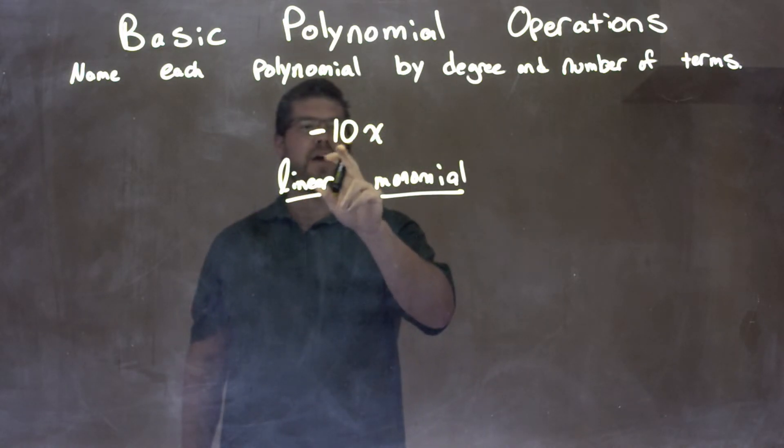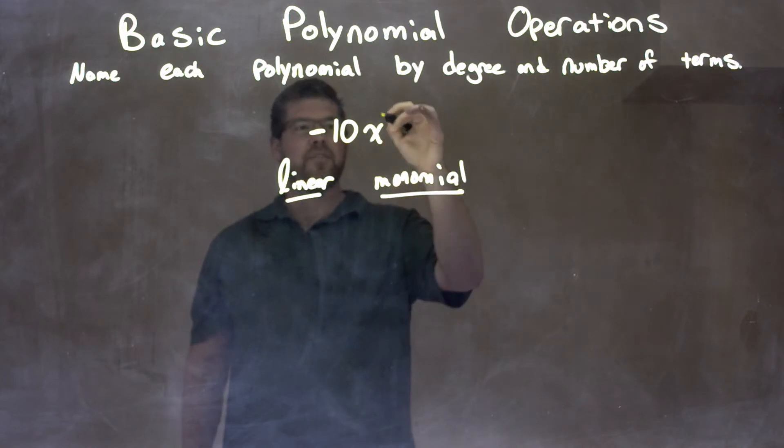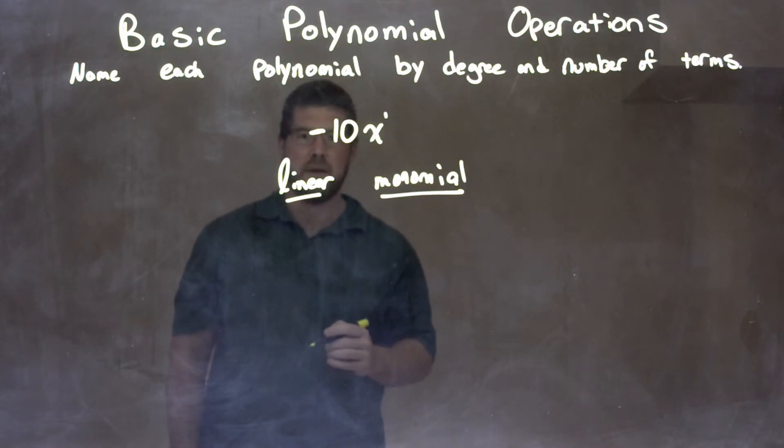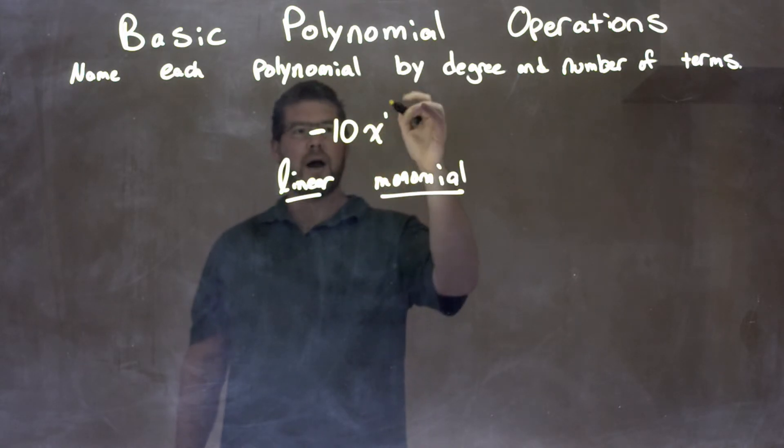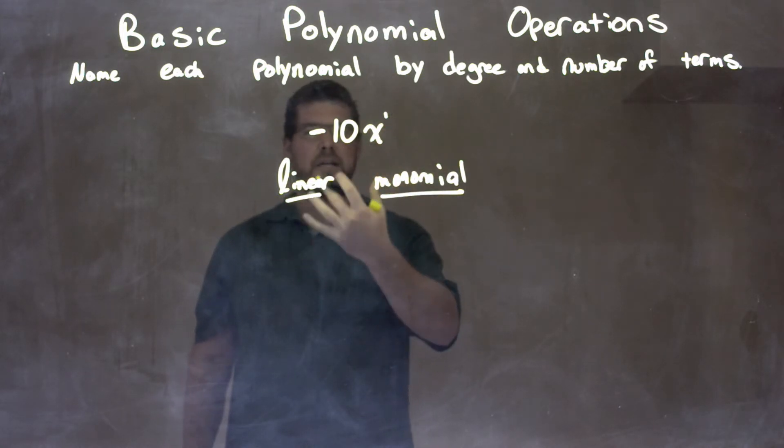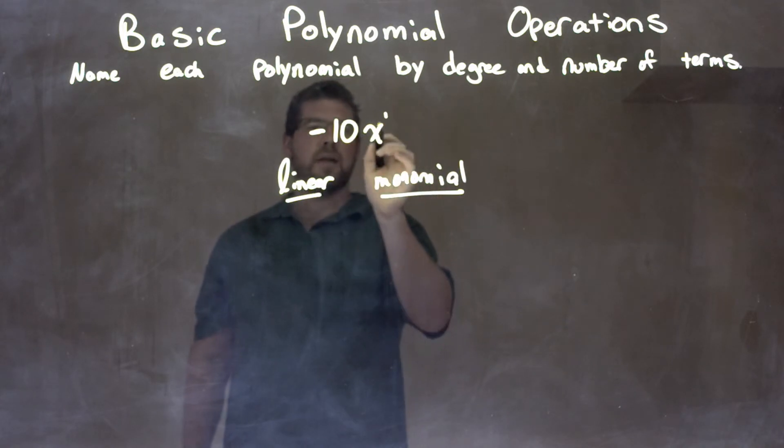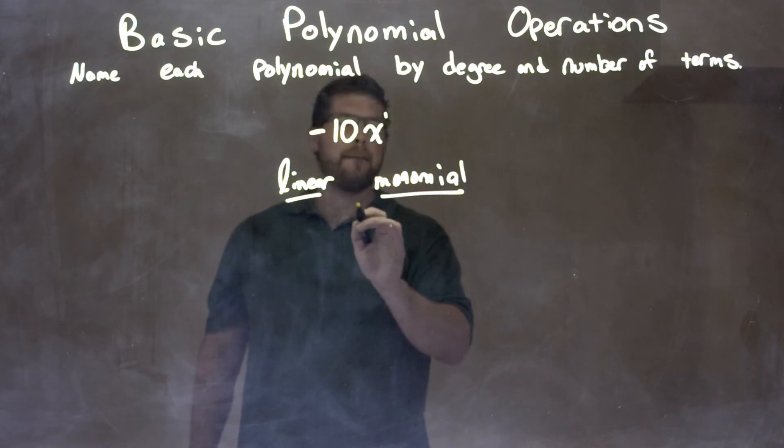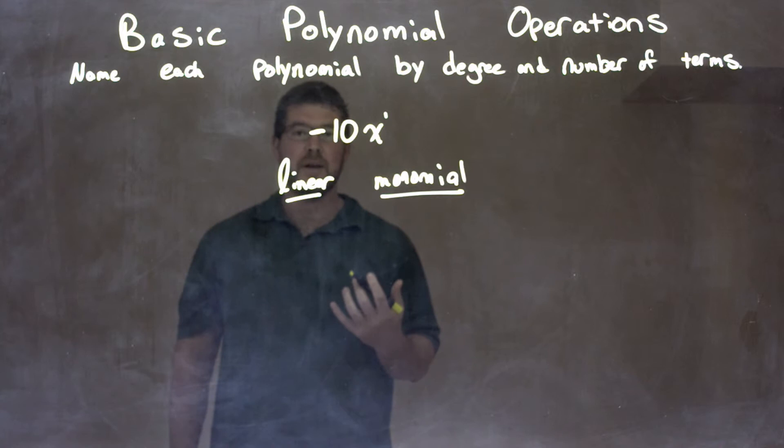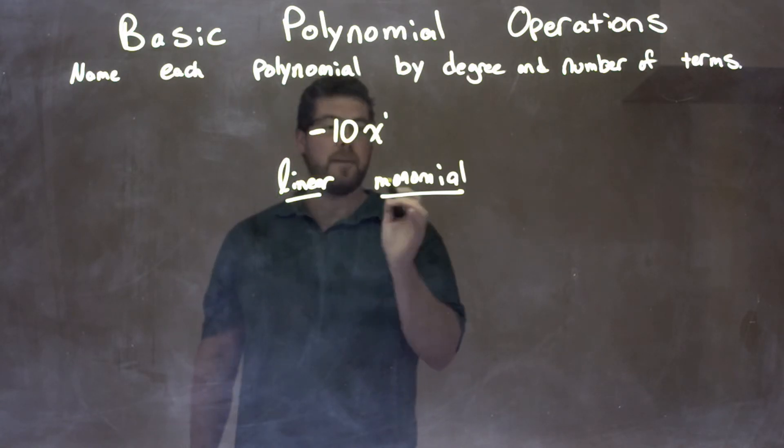So let's recap. We're given negative 10x. This is x to the first power, you see right there. It is a linear polynomial. The highest degree is 1, we call that linear. And then we have one term only, so it's a monomial. So our final answer is a linear monomial.